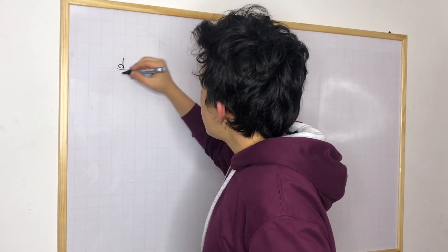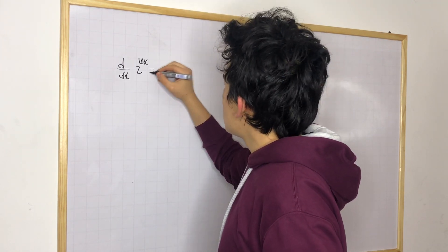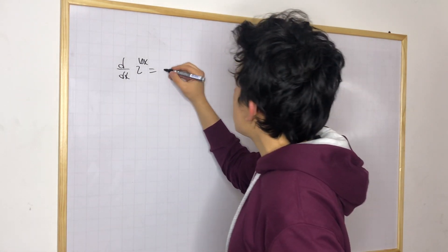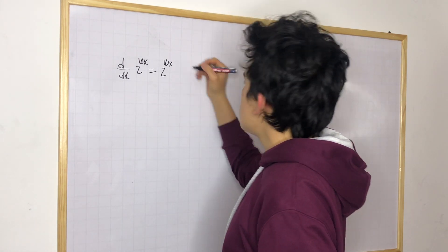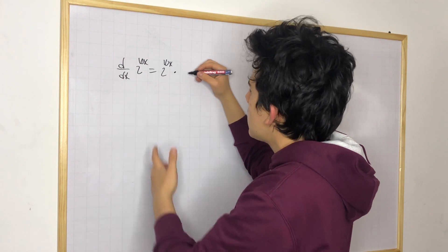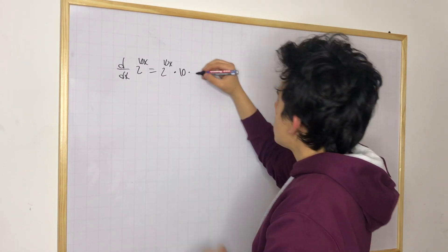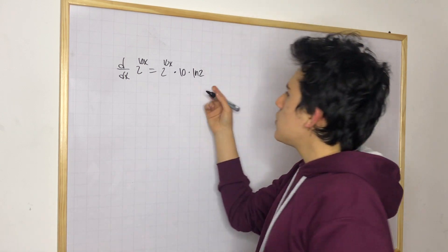What is the derivative of 2 to the 10x? We know, first of all, we need to write again this expression. So we get 2 to the 10x times the derivative of the exponent. So we have 10 times the natural log of 2. This is our answer.